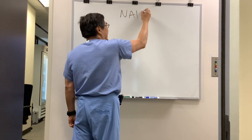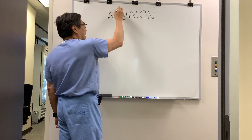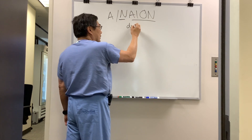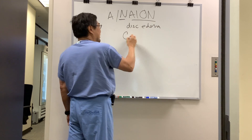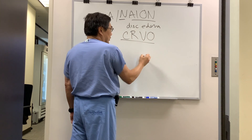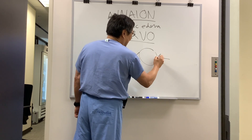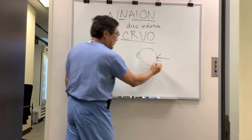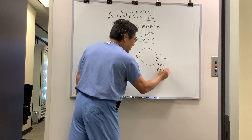Somebody wanted to know how we differentiate non-arteritic or arteritic anterior ischemic optic neuropathy disc edema from the disc edema that we see in a central retinal vein occlusion. As you know, in the eye, the good news about the optic nerve head is it only has two pathologic responses to disease — it can either swell or it can be pale.